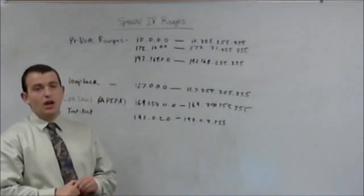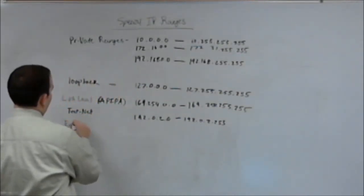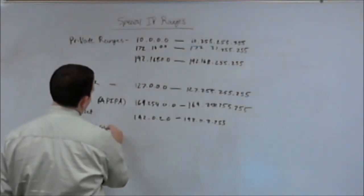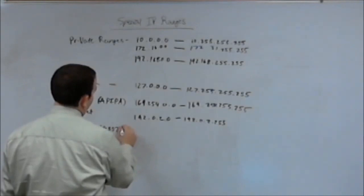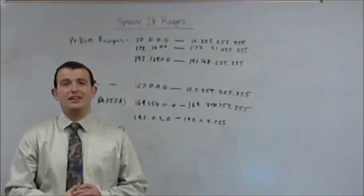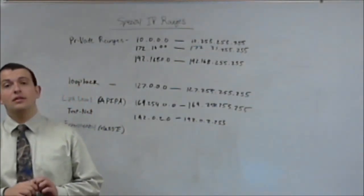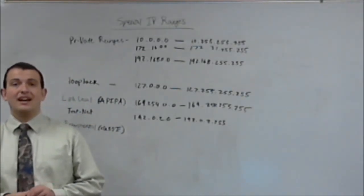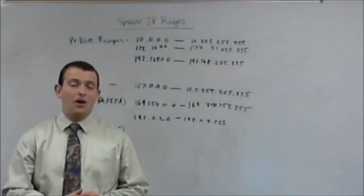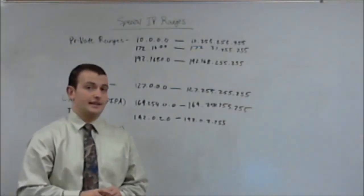Our next reserved block of addresses are what we call experimental addresses, or class E. These addresses are reserved for experimentation use only, and most network interface cards, without being able to manually change it inside of the operating system, are not assignable. However, in theory, these addresses could be converted to usable addresses if needed.